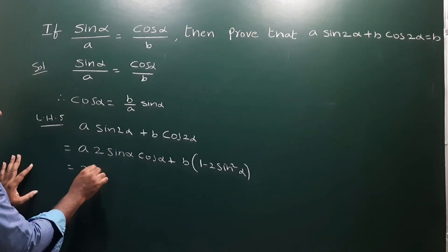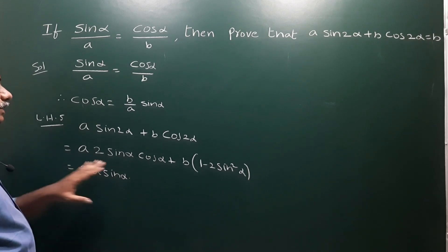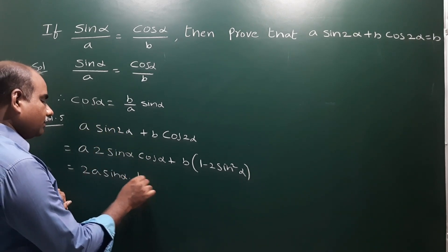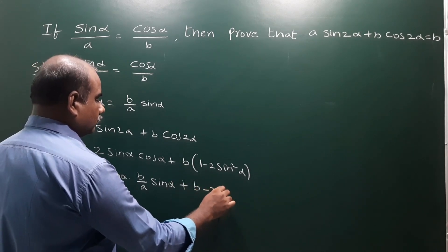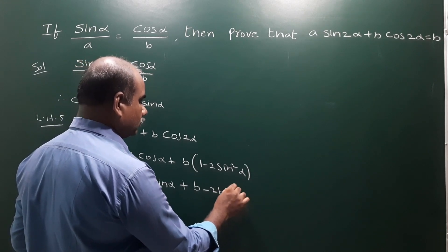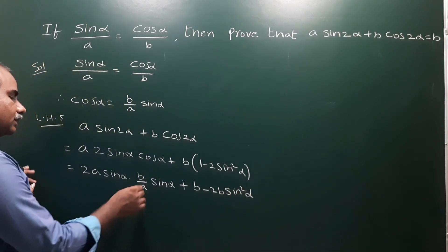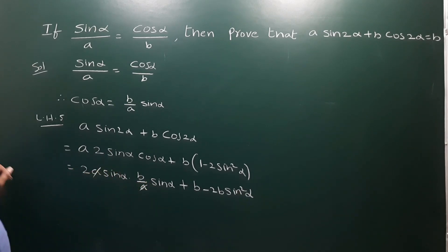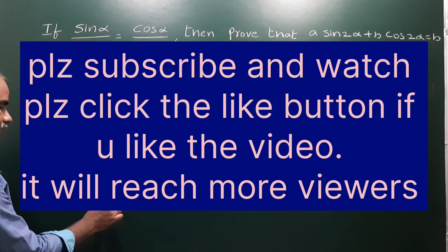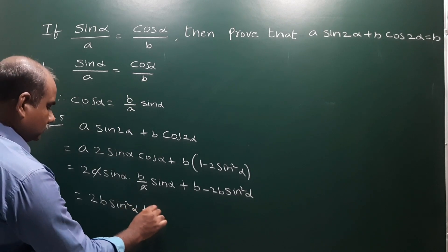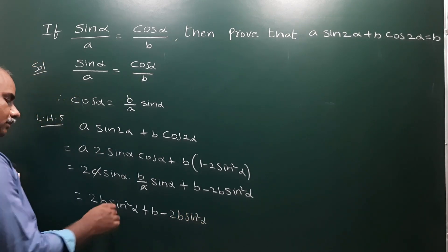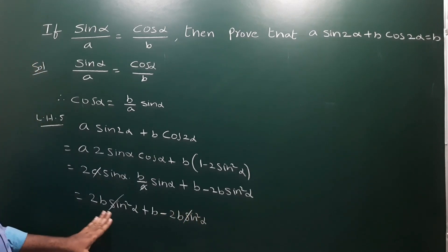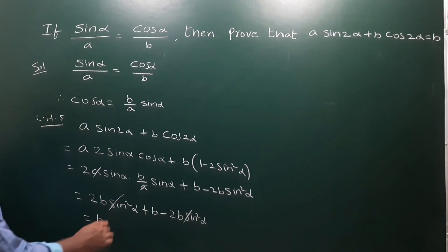This can be written as 2a·sinα·cosα. Now substitute the value of cosα as (b/a)·sinα: we get 2a·sinα·(b/a)·sinα plus b into (1 minus 2sin²α), which equals 2b·sin²α plus b minus 2b·sin²α. The 2b·sin²α terms cancel, so we are left with b, which is our RHS.